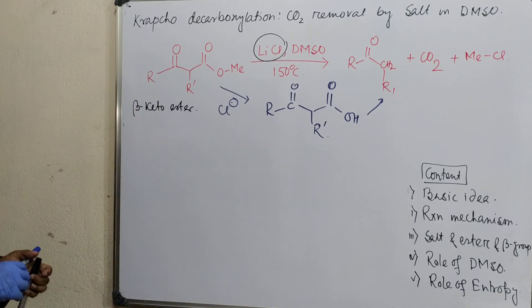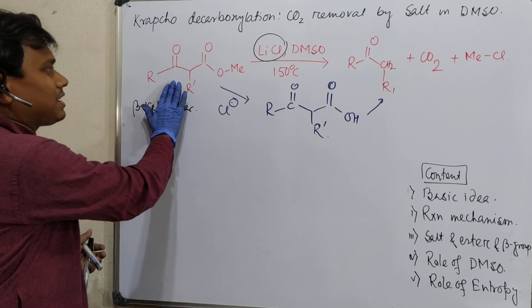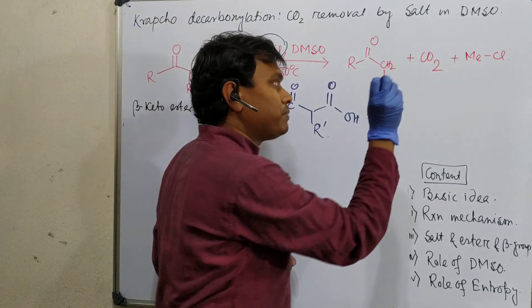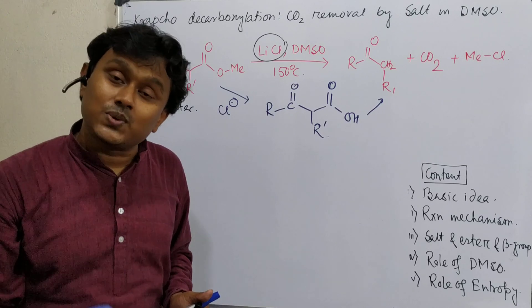First of all, see what is the product produced. So this is the reactant and this is the condition. These are the products. So based on that, you have to find out how this reaction is happening.